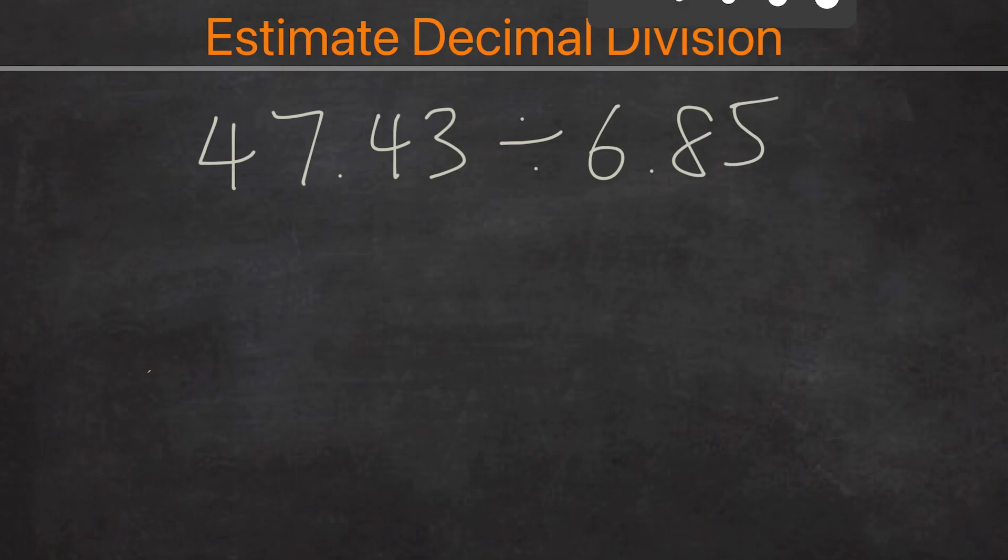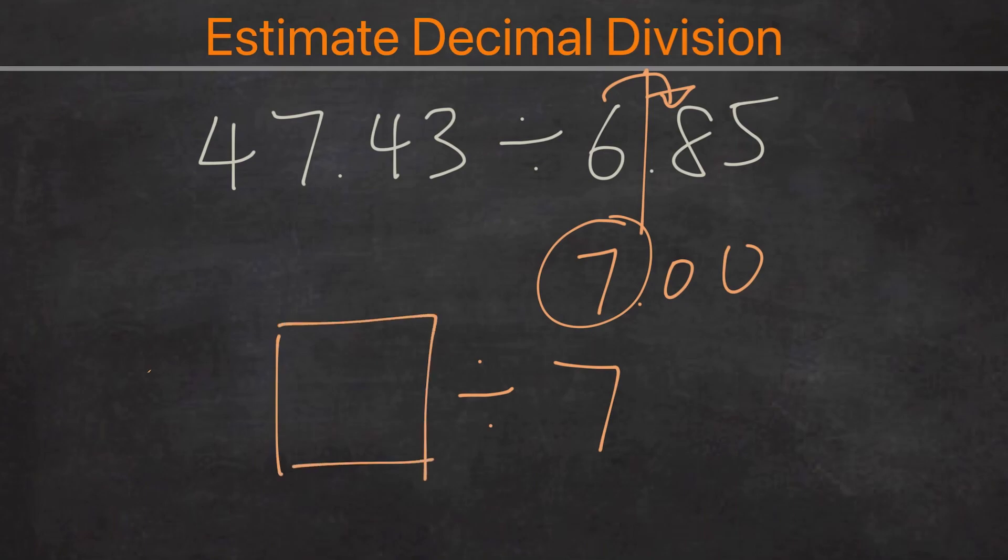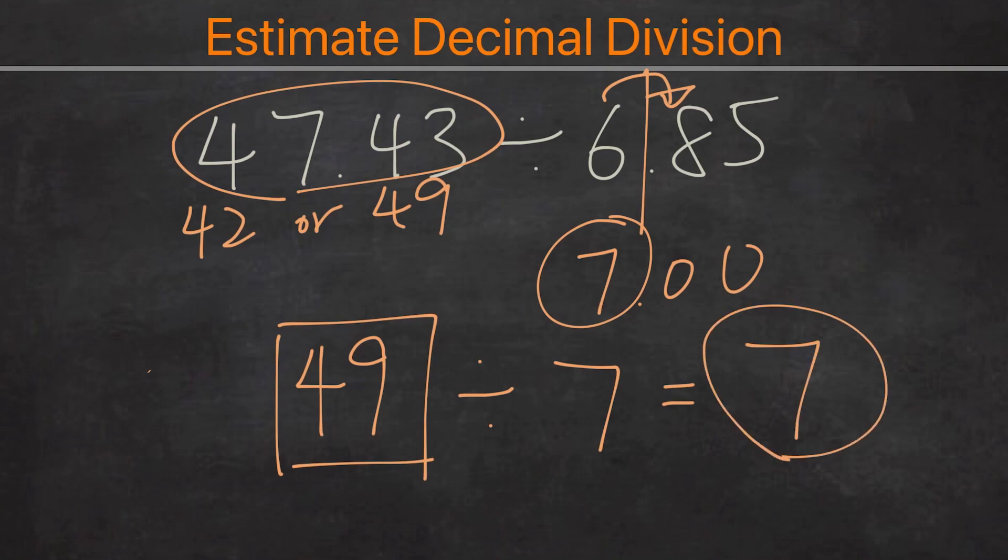Okay, I'm back. So hopefully you worked on the divisor, rounding to seven. And with the dividend, you have the choice of 49 or 42, and 49 is the closest. And the answer should be 7, so the approximation is 7. And if you've gotten 7 as the answer, great job, you've mastered this lesson.